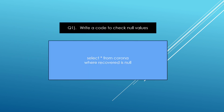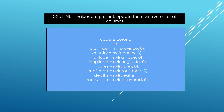The first question is: write code to check null values. Basically I find which columns have null values. My code is: SELECT * FROM corona WHERE recover IS NULL. Here 'recover' is my column name, and IS NULL finds the null values.